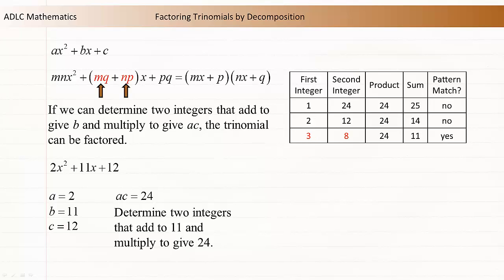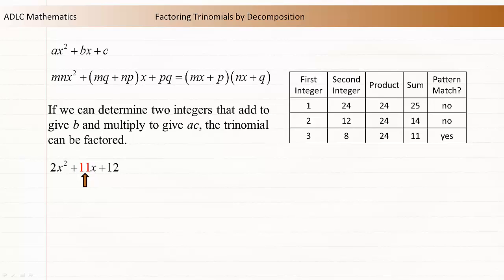The 3 and 8 represent the mq and np values of our original pattern. This tells us to split our b value into 3 and 8. So we'll rewrite this b value of 11 as the sum of 3 and 8.